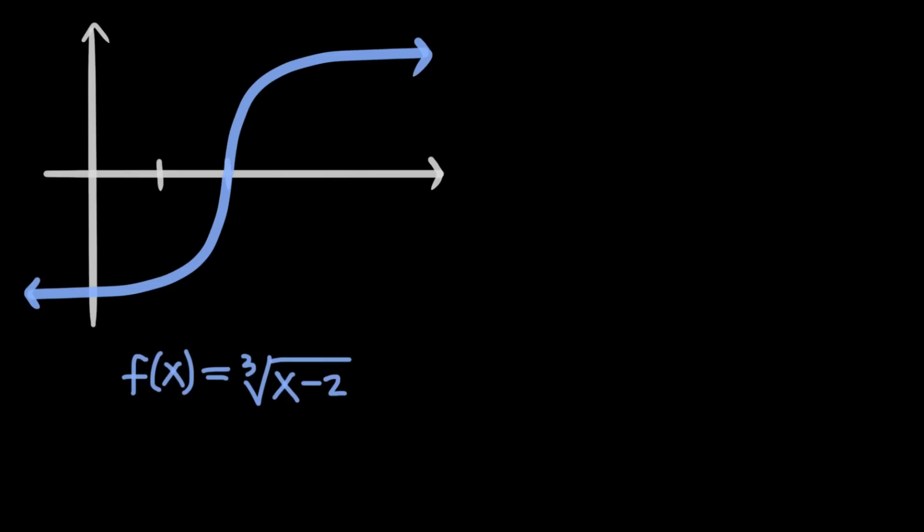A vertical tangent line, on the other hand, aligns with a point on the curve at which the slope is infinite or exactly vertical. This function, for example, appears to have a vertical tangent line here.